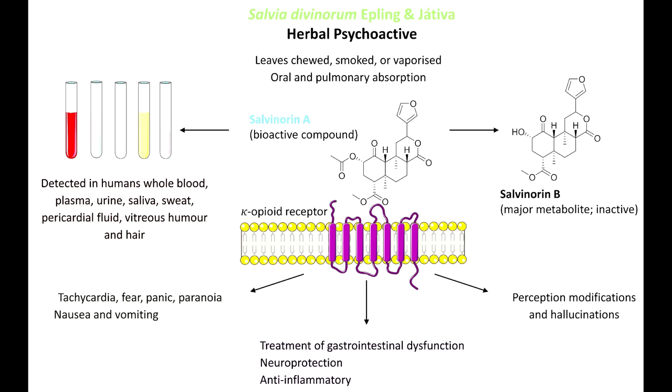The percentage of Salvinorin A being absorbed through the oral route in humans was reported to be around 85.8%. Smoking is also an efficient way of consumption. After inhaling the smoke of dried leaves or vaporized extract, this drug produces a rapid onset of effects and an intense high within 30 seconds, having a peak about 2 to 5 minutes.